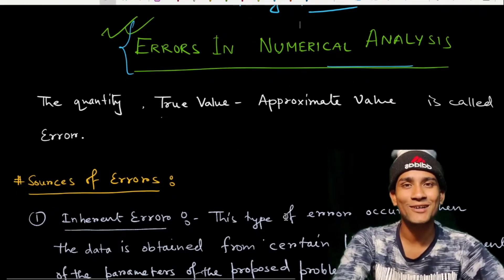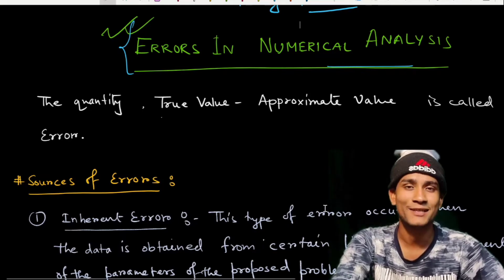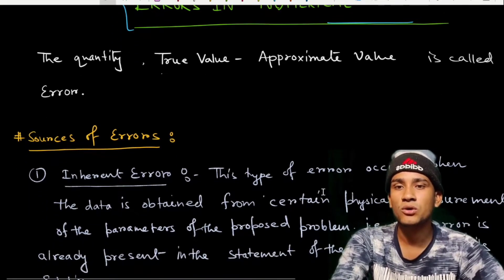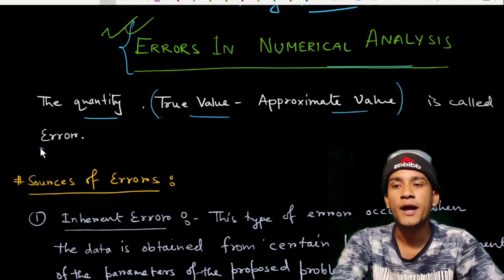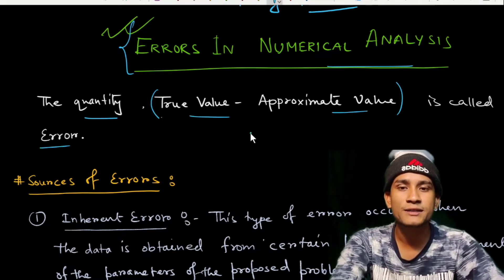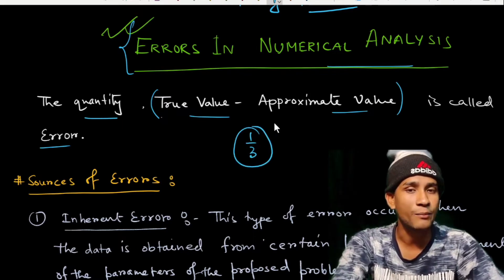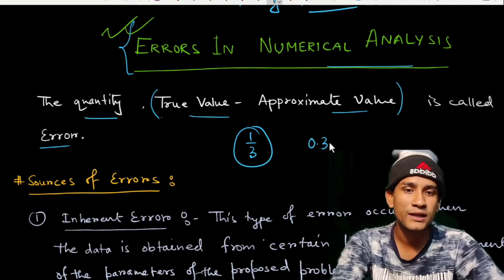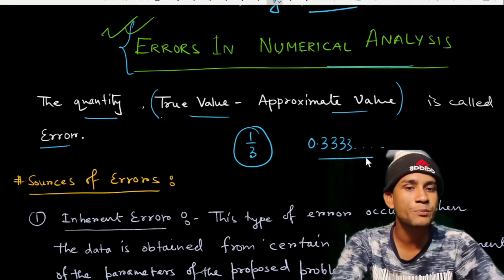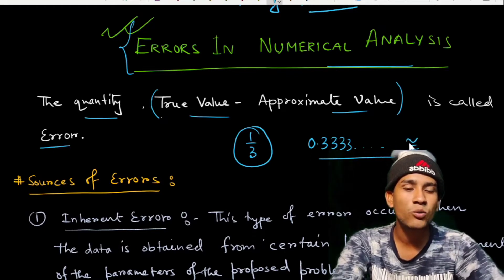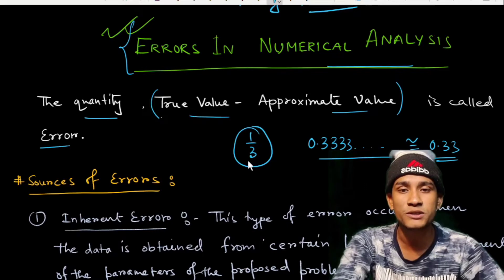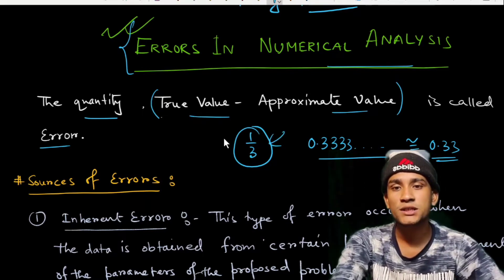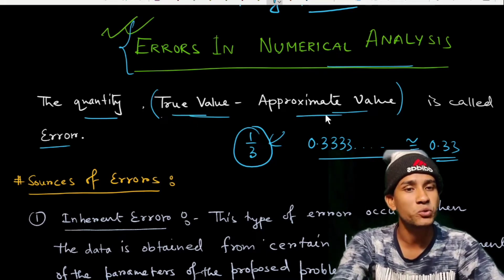If the lecture is helpful, please like this video, share with your friends, and subscribe to the channel. Now, what is error? The quantity true value minus approximate value is called an error. For example, one-third is a true value, and if we write 0.33 as its approximate value, the difference between the true value and the approximate value is known as the error.